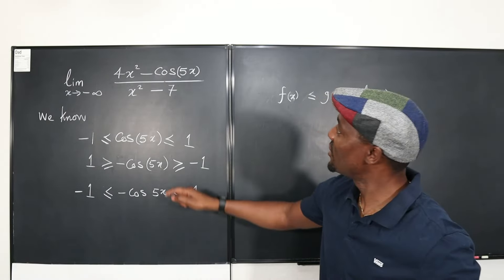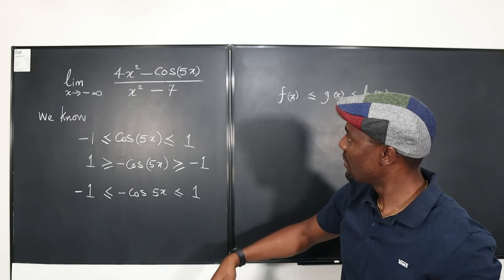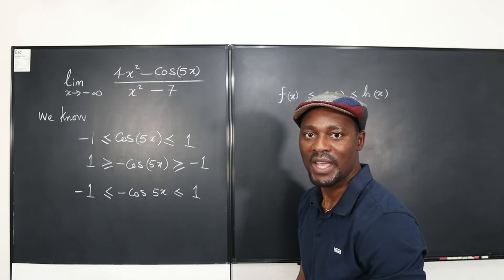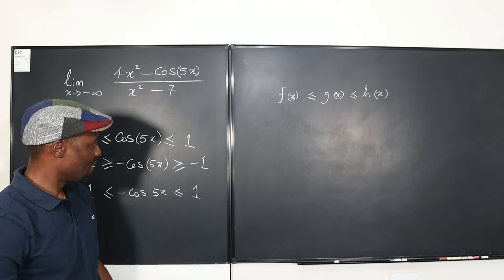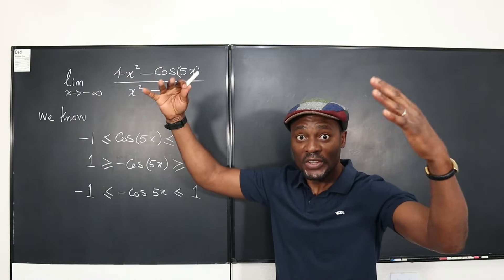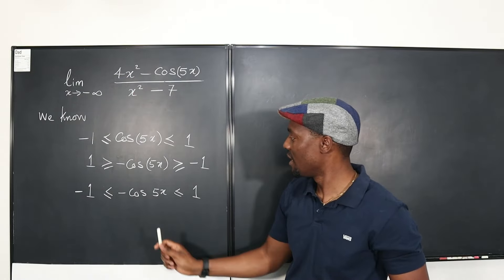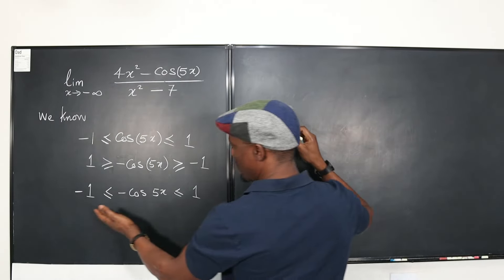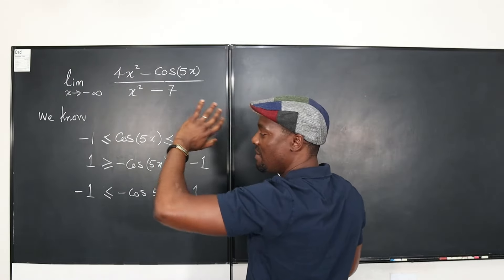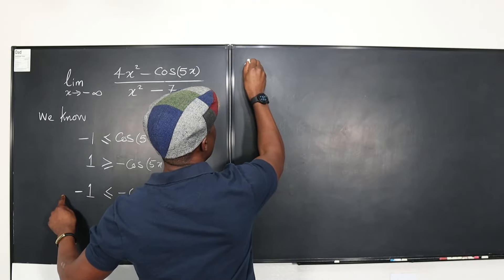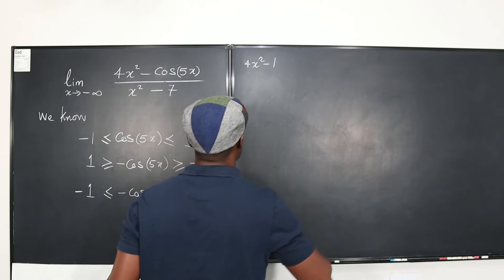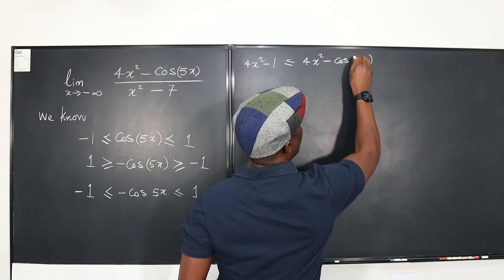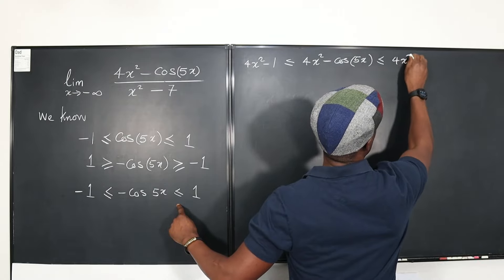Now we still want this to look like the expression in the problem. It looks like we need to add 4x². So we add 4x² to all three parts: 4x² minus 1 ≤ 4x² minus cos(5x) ≤ 4x² plus 1. This is beginning to look like what we have in the question — we haven't introduced the limit yet, but we'll get to that.